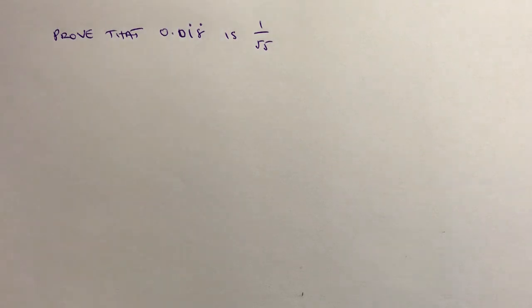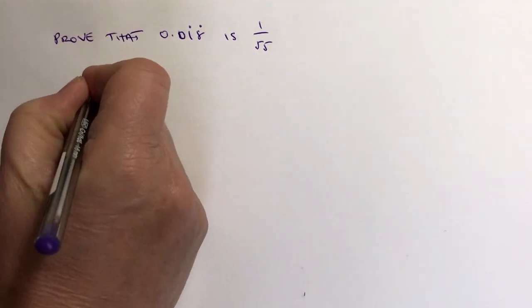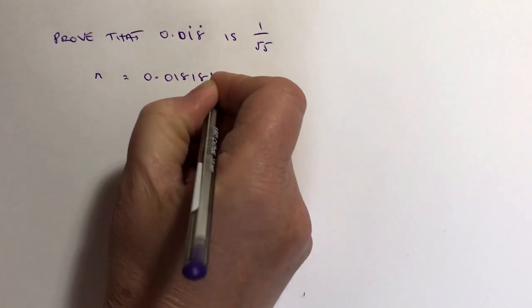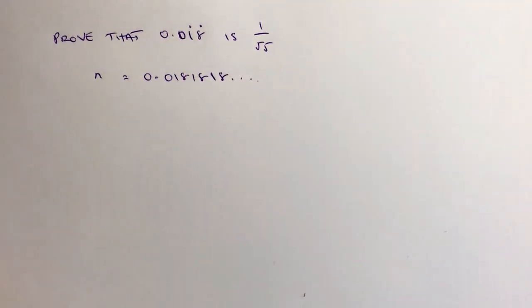We're going to follow the same routine that we always do, and then from there we're going to see if we can reduce what we get to the value of 1 over 55. So what we normally do is say n equals 0.018181818, and that carries on—that's the 18 recurring.